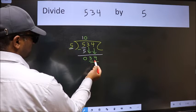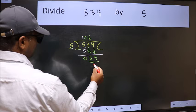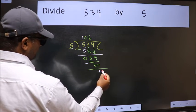Then only we can bring this number down. Now 34. A number close to 34 in 5 table is 5 6 30. Now we should subtract. We get 4.